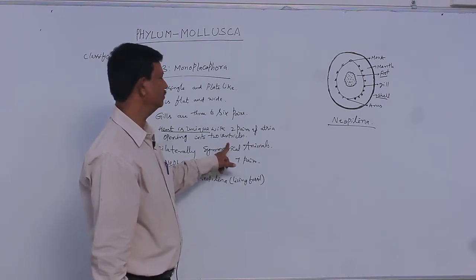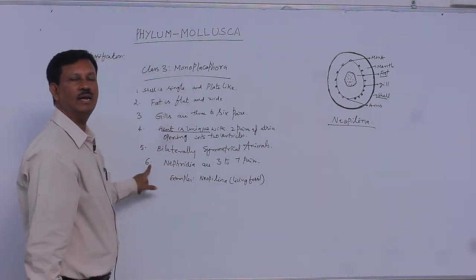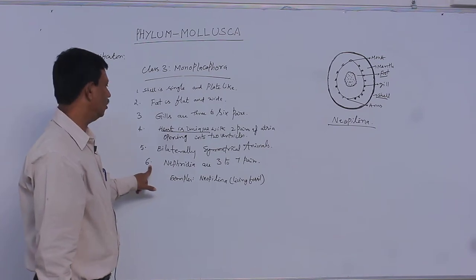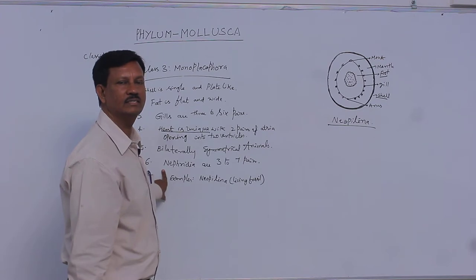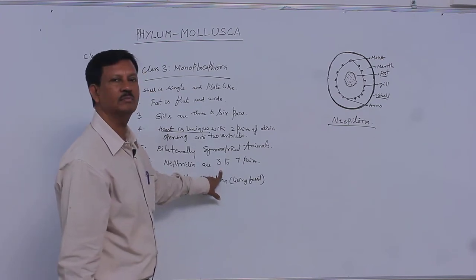That is a special type of heart present in Monoplacophora. These are bilaterally symmetrical animals. The body is divided into two equal parts. And nephridia: the excretory organs are known as nephridia. These nephridia are present, three to seven pairs in the body.